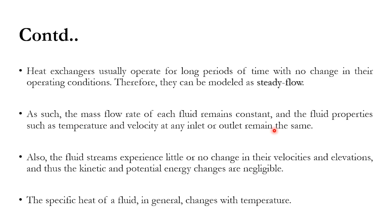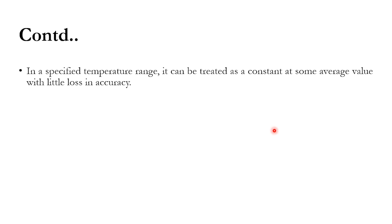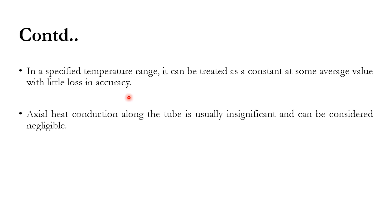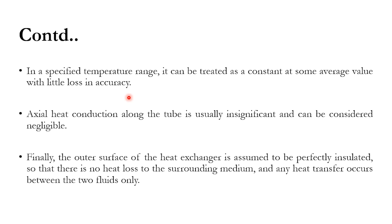The fluid streams experience little or no change in their velocities and elevations, so kinetic and potential energies are negligible. The specific heat Cp is dependent on temperature for real systems but not on pressure. However, within a specified range we can treat it as a constant. For example, for water between 20 to 50 degrees Celsius, we assume a constant Cp value of 4.18 kJ/kg·K, though it may slightly fluctuate causing a small loss in accuracy.